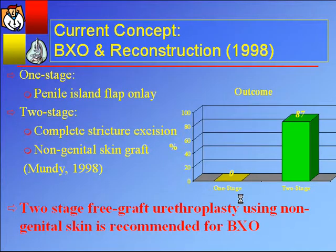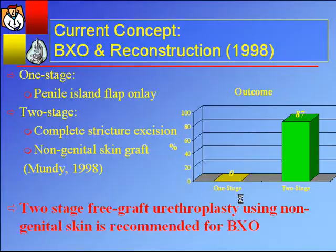Our current concept for those long-segment strictures from BXO: Anthony Mundy put it very nicely when he showed his outcomes of one-stage skin transfer versus two-stage procedure. His success rate of BXO with one stage was zero — pretty dramatic versus about 87% with the staged technique. So the current standard for someone with BXO and a penile urethral stricture is a two-stage pre-graft staged urethral reconstruction as the treatment of choice.